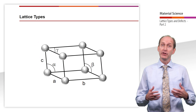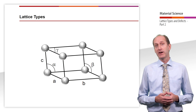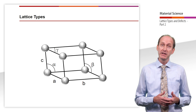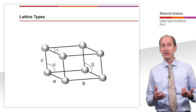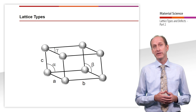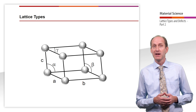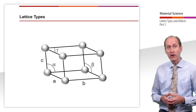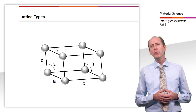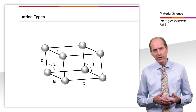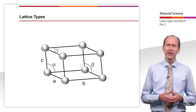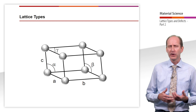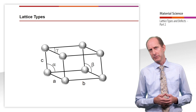The different unit cells are uniquely identified by the atomic distances A, B and C, which are called lattice constants, and the lattice angles alpha, beta and gamma. The lattice constants of metals are only between 0.25 and 0.5 nanometers, which means that they are smaller than a millionth of a millimeter.